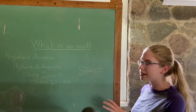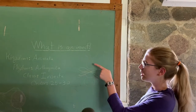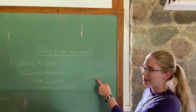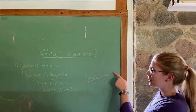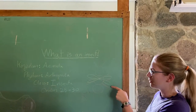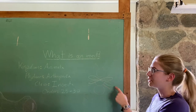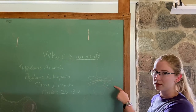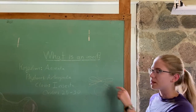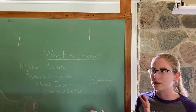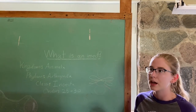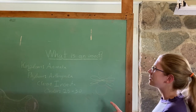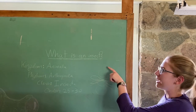Some of the defining features of an insect are that it has three body segments: the head, thorax, and abdomen. It'll have three pairs of legs all attached to the thorax, and usually two sets of wings also attached to the thorax. Some insects might only have one or no wings, and some only have two wings during certain parts of their life cycle. And then the last thing is that they have two antennae.